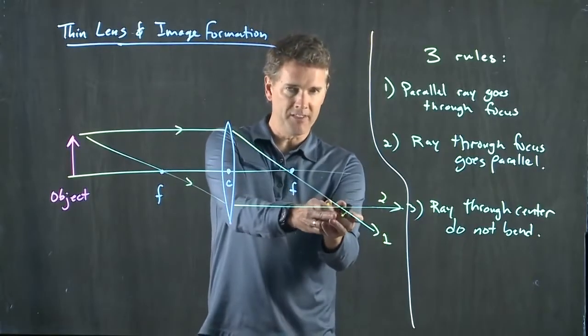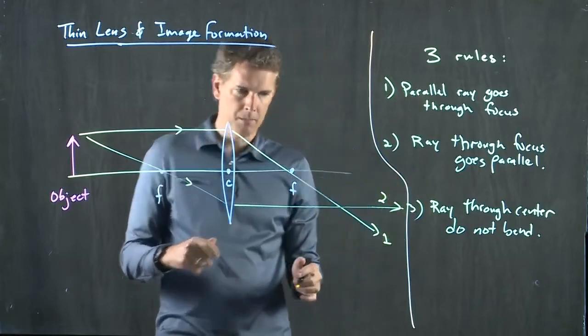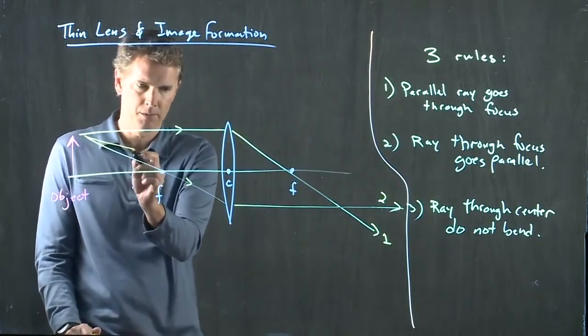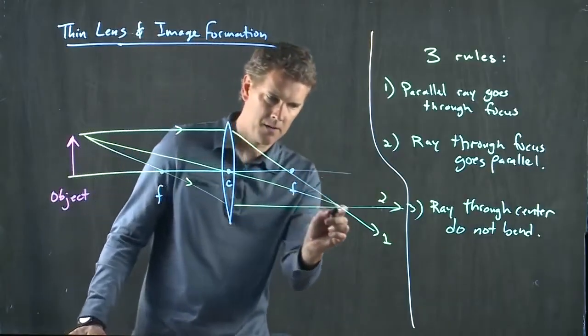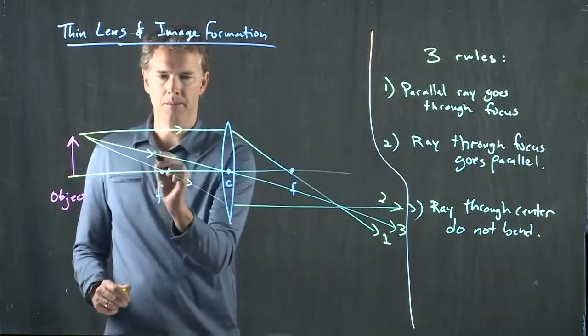Now we already have an intersection point, so you really only have to do two of these three. But just for kicks, let's draw the third one and make sure it works out. Rays through the center do not bend. That's ray number three.